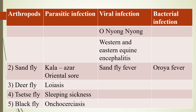Fourth, tsetse fly — this transmits sleeping sickness, also called African trypanosomiasis, caused by Trypanosoma brucei species. The tsetse fly includes Glossina species.